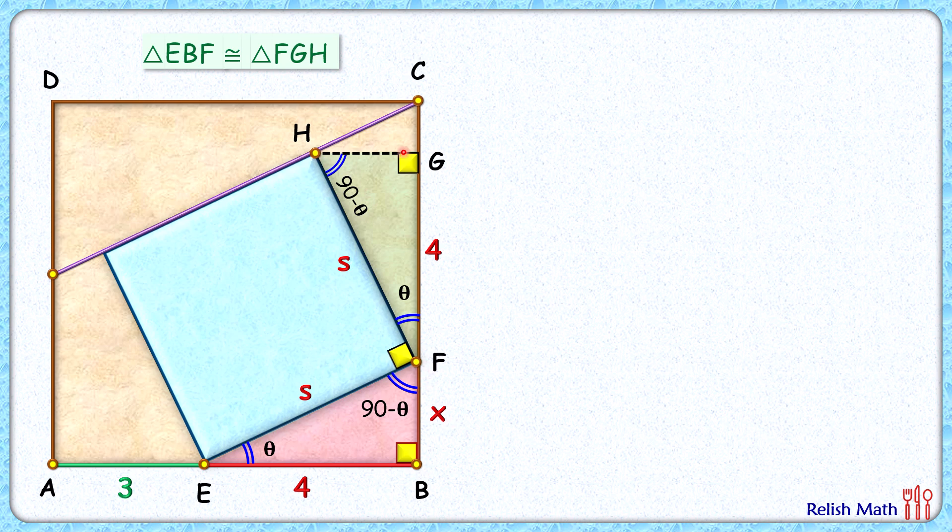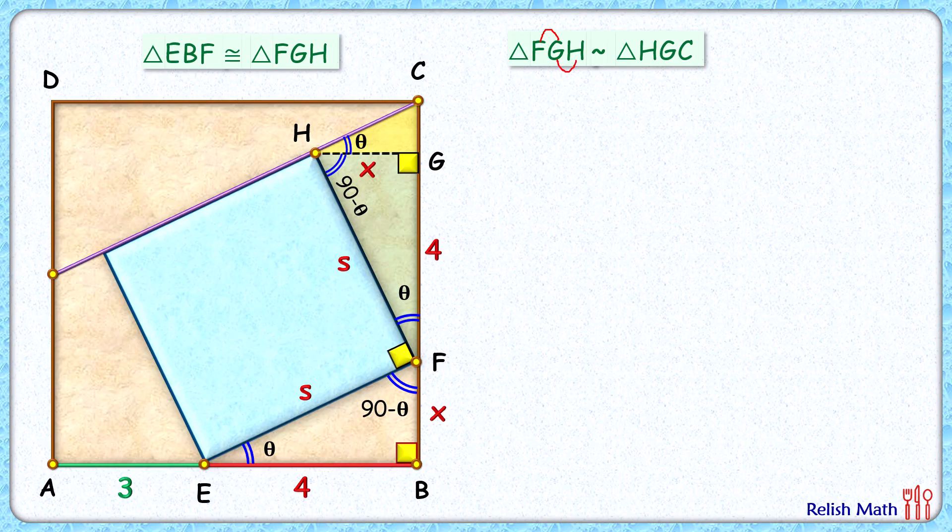Now if you look at this yellow triangle and this green triangle, in this yellow triangle, angle H is 90, so this remaining angle here will be theta degrees. And this angle at G is 90. So by angle-angle similarity, we can say that this yellow and green triangle are similar to each other. Triangle FGH is similar to triangle HGC. As the triangles are similar, the ratio of corresponding sides will be equal. That is, FG upon GH will be equal to HG length upon GC length.